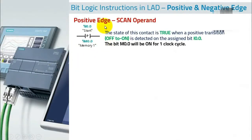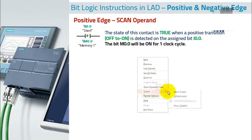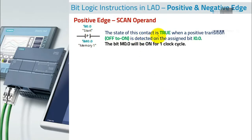Let's start with the positive edge scan operand. The symbol is similar to a NO contact but with a 'P' in the middle, indicating positive. The state of this contact is true when a positive transition — off to on — is detected on the assigned bit I0.0.